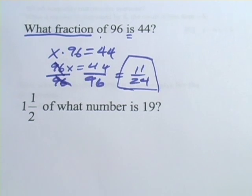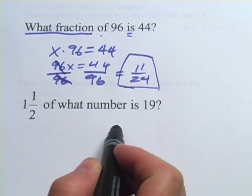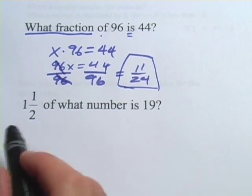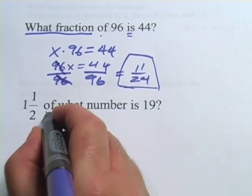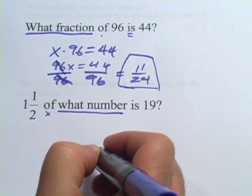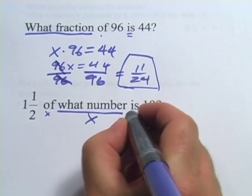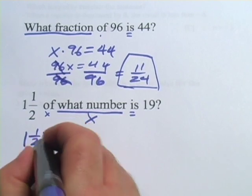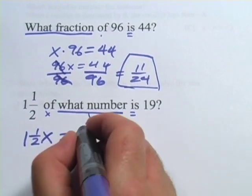Alright let's try one more. This one says 1½ of what number is 19. Might be confusing the way it's worded. Let's just plug it in. Of means multiply, what number is our X, is is equal sign, so 1½ times X is 19.